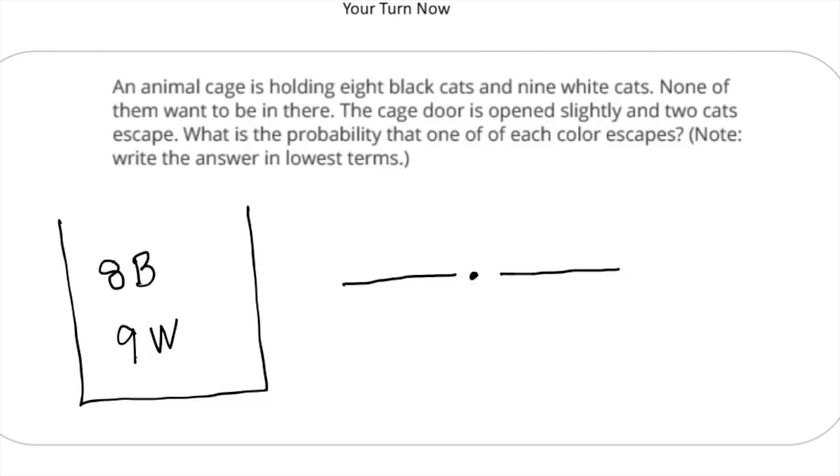Alright, welcome back. Let's see how I do this practice problem. So the problem says an animal cage is holding eight black cats and nine white cats. None of them want to be in there. The cage door is open slightly and two cats escape. What is the probability that one of each color escapes? Note, write the answer in lowest terms. So here I kind of do a little diagram where we have a cage and 8B stands for the eight black cats and 9W stands for the nine white cats.